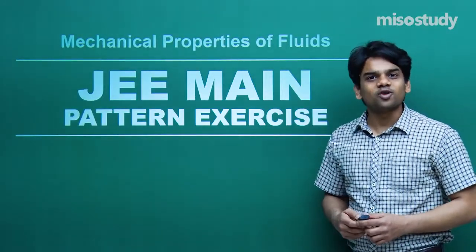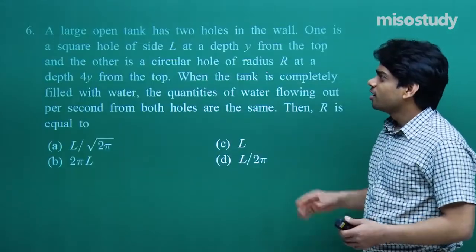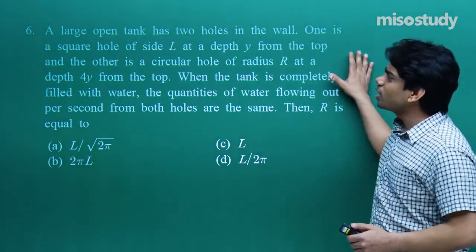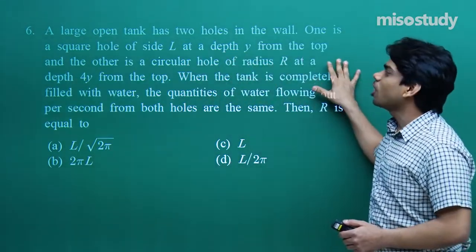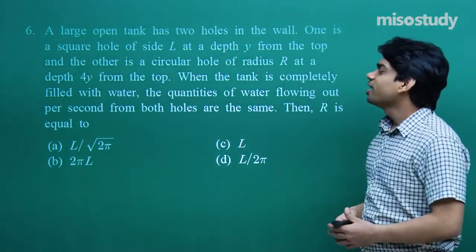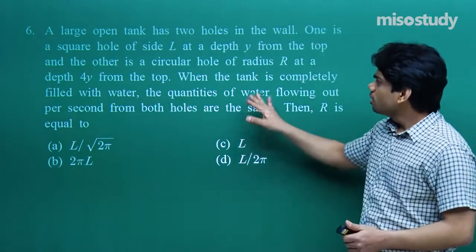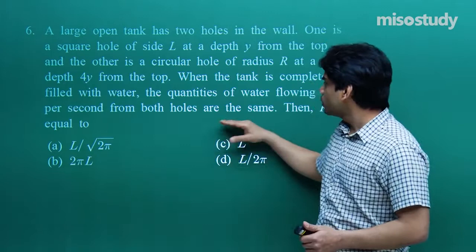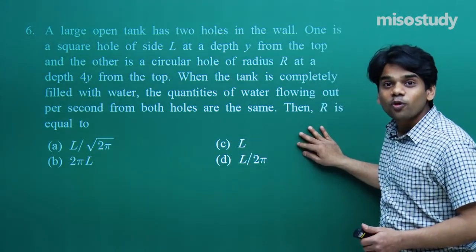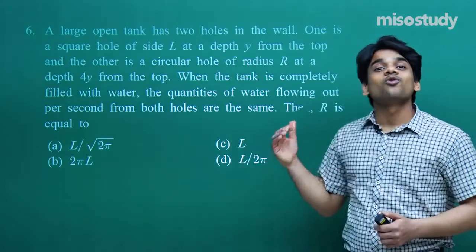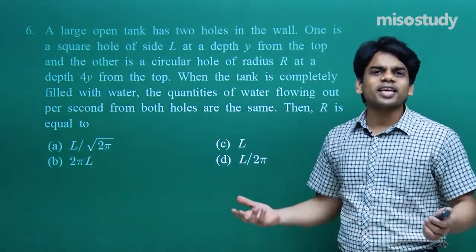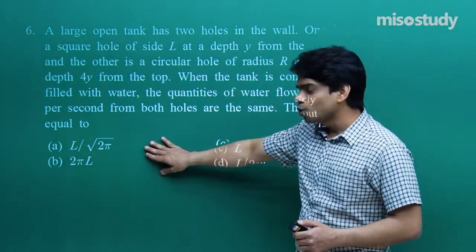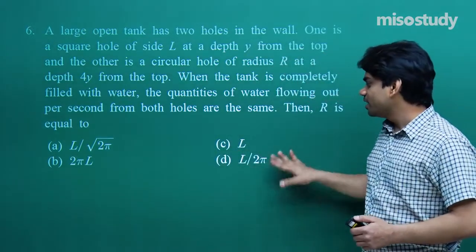Let's go ahead with question number six. A large open tank has two holes in the wall. One is a square hole of side l at a depth y from the top, and the other is a circular hole of radius r at a depth 4y from the top. When the tank is completely filled with water, the quantities of water flowing out per second from both holes are the same — that means the rate of flow, or volume per unit time, is the same from both holes. Find r: (a) l/√(2π), (b) 2πl, (c) l, (d) l/(2π).